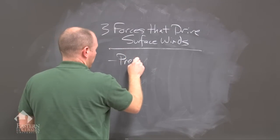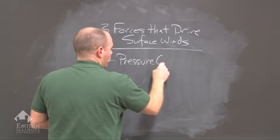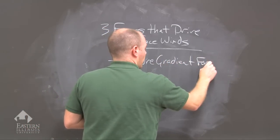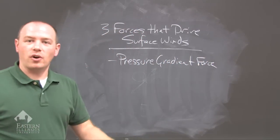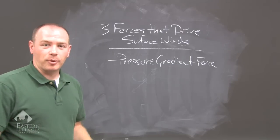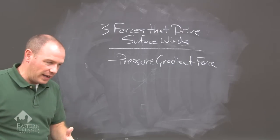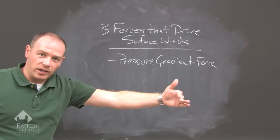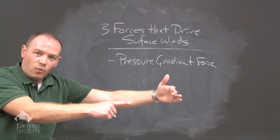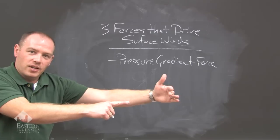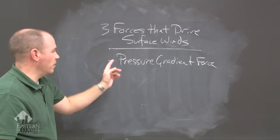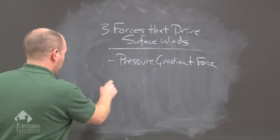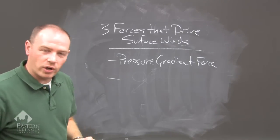The first force is the pressure gradient force. Pressure gradient is the change in pressure over distance. For example, if we go from high to low — the highest values are here, the lowest values are here — we change pressure as we go. That is a gradient: a change in pressure over distance. That is the pressure gradient force.